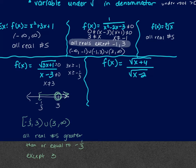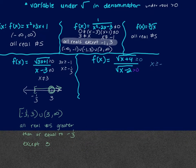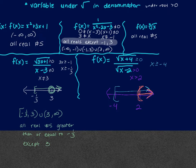For f(x) equals the square root of (x plus 4) over the square root of (x minus 2): the numerator must be greater than or equal to 0, so x is greater than or equal to negative 4; the denominator must be strictly greater than 0, so x is greater than 2. This is an AND condition — it must satisfy both, so I only use where they overlap, which is x greater than 2. In interval notation: 2 to positive infinity. In words: all real numbers greater than 2.